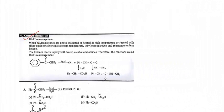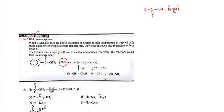Now we come to question 9. It's a Wolff rearrangement reaction. What happens here: an alpha diazoketone reacts with a base (Ag₂O) at high temperature to generate a ketene. The structure of an alpha diazoketone is: R-CO-CH-N₂, where N has a positive charge and a double bond N has a negative — written as N⁺=N⁻.